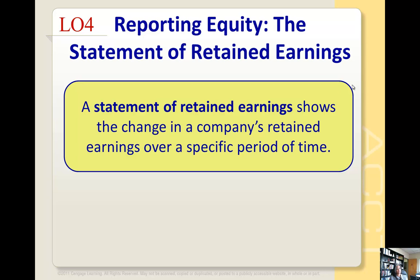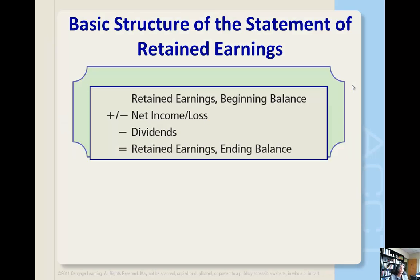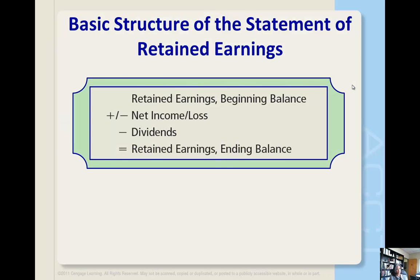Let's move on and talk about the statement of retained earnings — our third statement. The statement of retained earnings shows the change in a company's retained earnings over a specific period of time, because owners are usually interested in how their equity is growing through profitable operations and how that equity is distributed in the form of dividends. The basic structure starts with the beginning balance of retained earnings, adds net income or subtracts any loss, then subtracts dividends for the period to arrive at ending retained earnings.